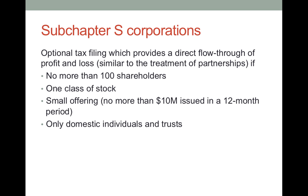What happens if you elect subchapter S status and in the future it turns out not to be ideal for you in terms of tax treatment? Can you flip? The answer is yes — the following year you simply file as a regular C corporation. It's sometimes to your advantage not to be treated as a subchapter S, so the thing to do is to sit down with a knowledgeable attorney and accountant to figure out what's in your best interests. And that concludes our discussion.